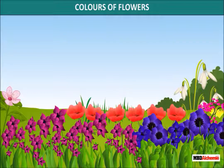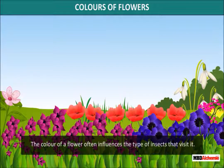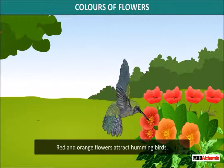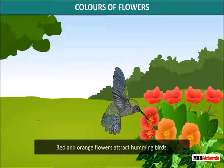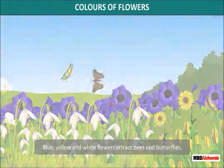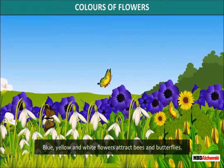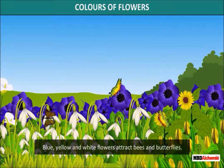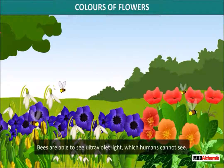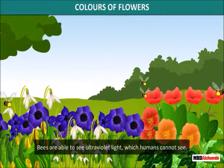The color of a flower often influences the type of insects that visit it. Red and orange flowers attract hummingbirds. Maroon flowers attract flies and some beetles. Blue, yellow, and white flowers attract bees and butterflies. Bees are able to see ultraviolet light, which humans cannot see.